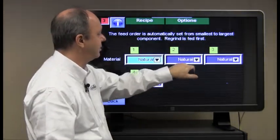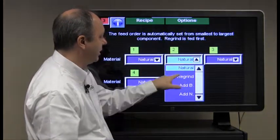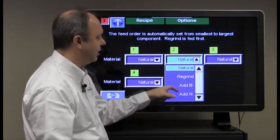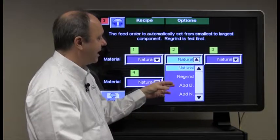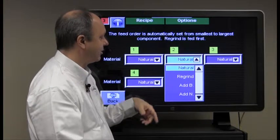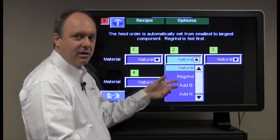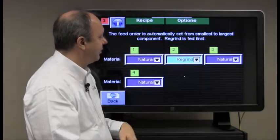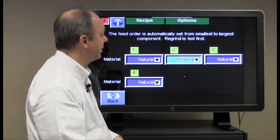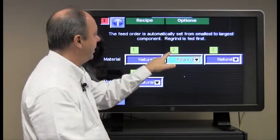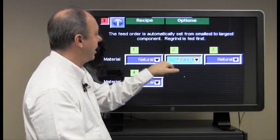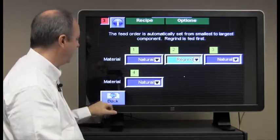Regrind keep in mind is always fed first. So we'll change this component perhaps to regrind. We have other choices here for injection processors where you can select additive batch or additive natural. We'll return to this. For now we'll just select regrind. We'll review the other options later. So I've renamed component two is going to be a regrind component. Go back.